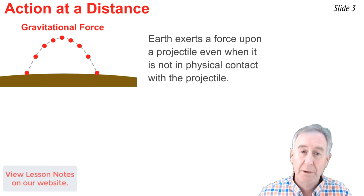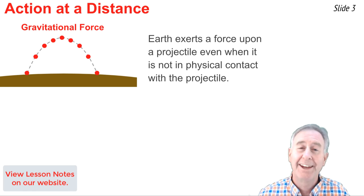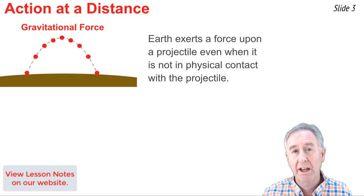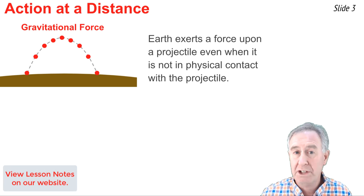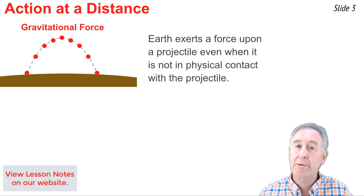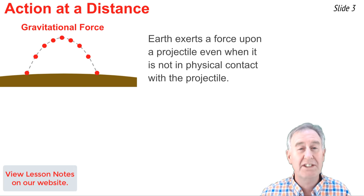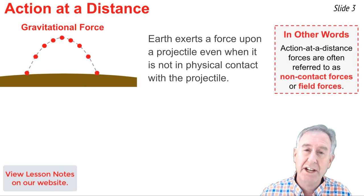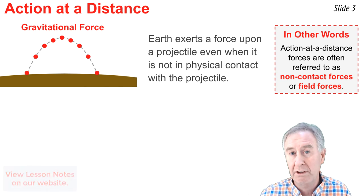Magnetic forces, gravitational forces, and electric forces are all examples of actions that occur at some distance away. Consider a projectile traveling through the air — the Earth exerts a gravitational force upon it, even though the Earth and the projectile are not in physical contact with one another. This is an action occurring some distance away. We refer to these types of forces as non-contact forces, or field forces.